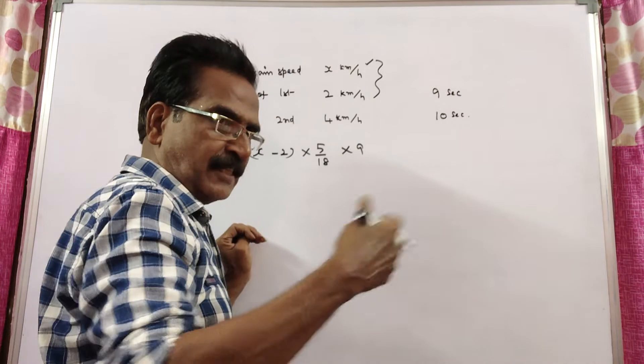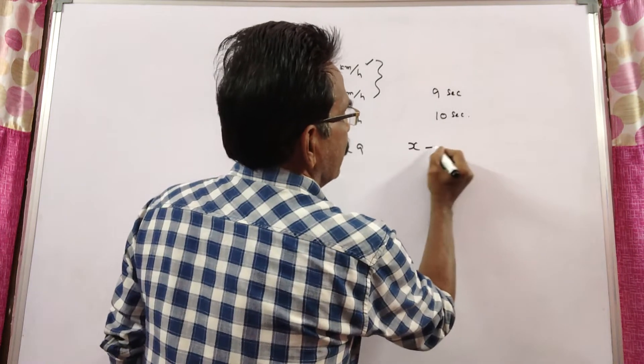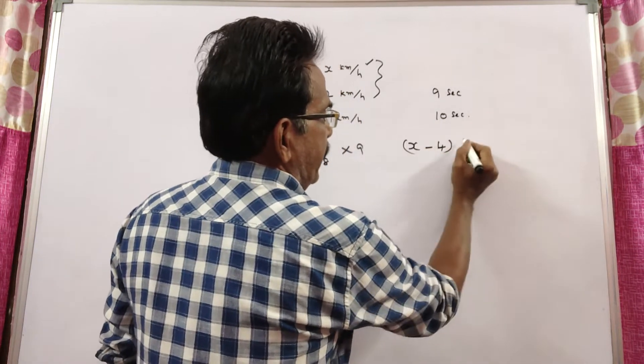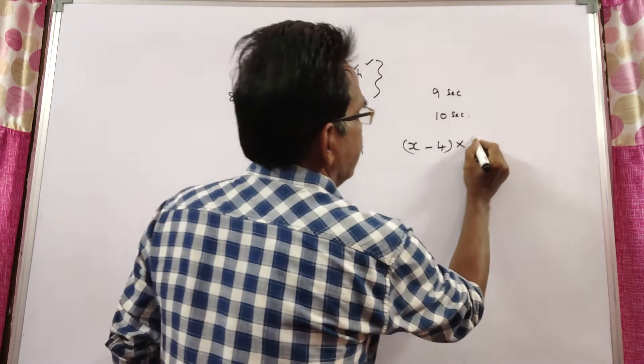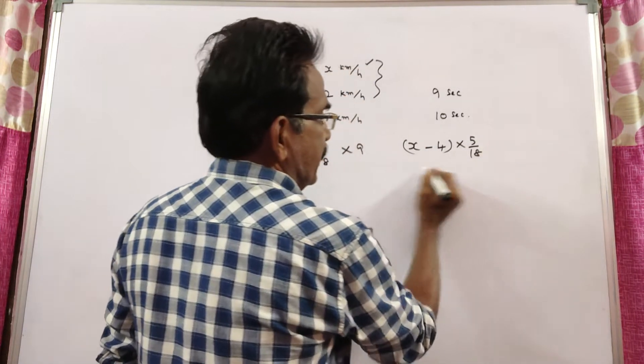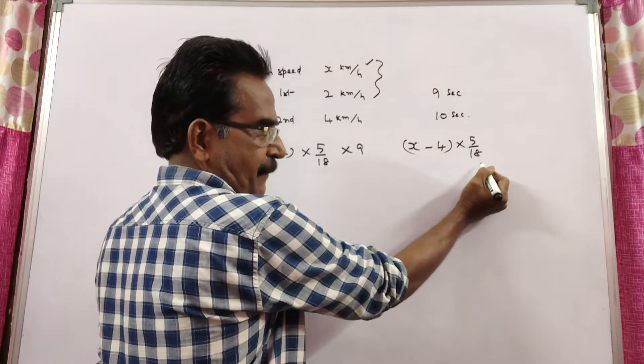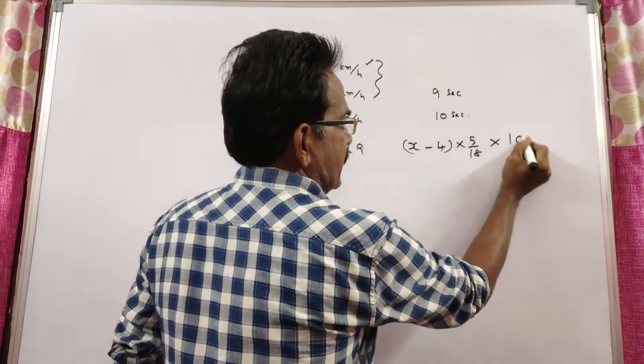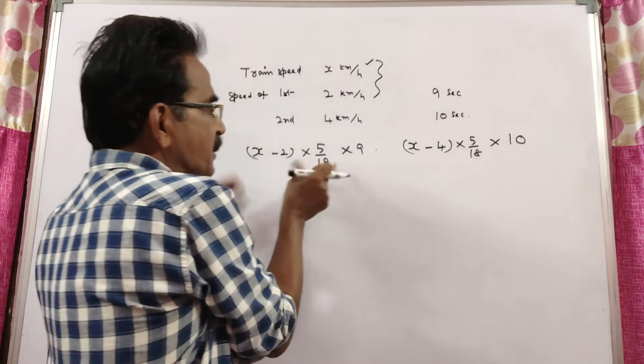Let us take the second case, that is while crossing the second man. So, we have relative velocity x-4 into 5 by 18. This is the relative velocity while crossing the second man in 10 seconds. So, this is the length of the train.